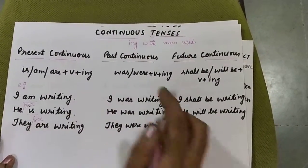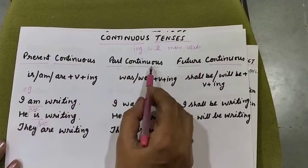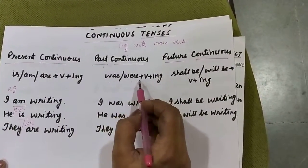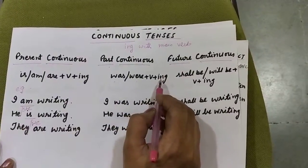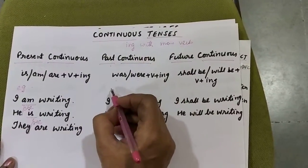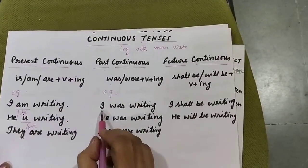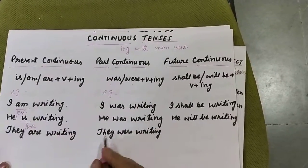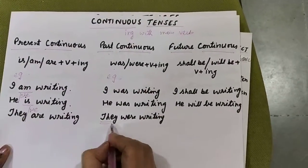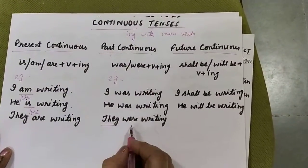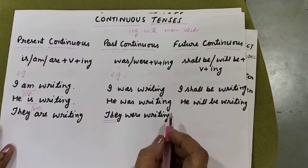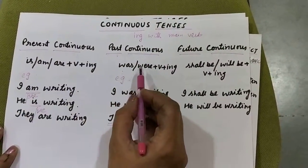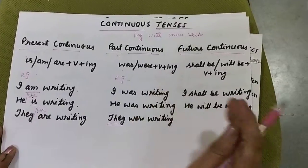Now we will move on to the past continuous. In past continuous, we use 'was' or 'were' plus the main verb with '-ing' added. For example, 'I was writing' or 'he was writing'. And if the subject is plural, we use 'were'. So 'they were writing'. So what do we use in past continuous? 'Was' or 'were' plus '-ing' with the main verb.